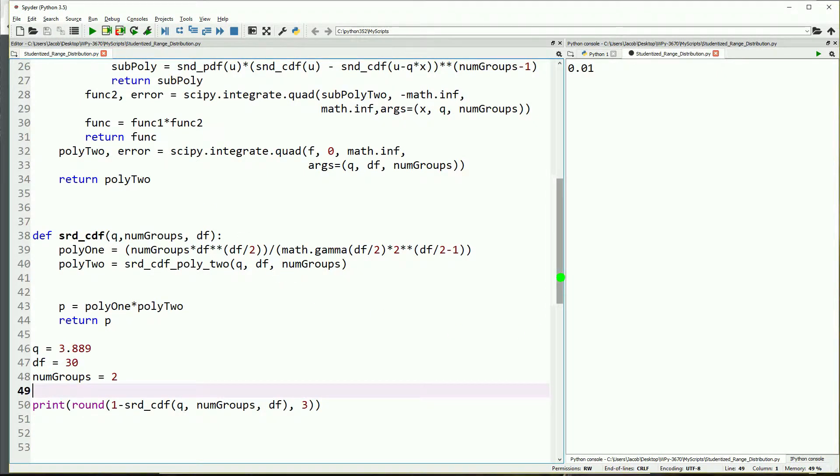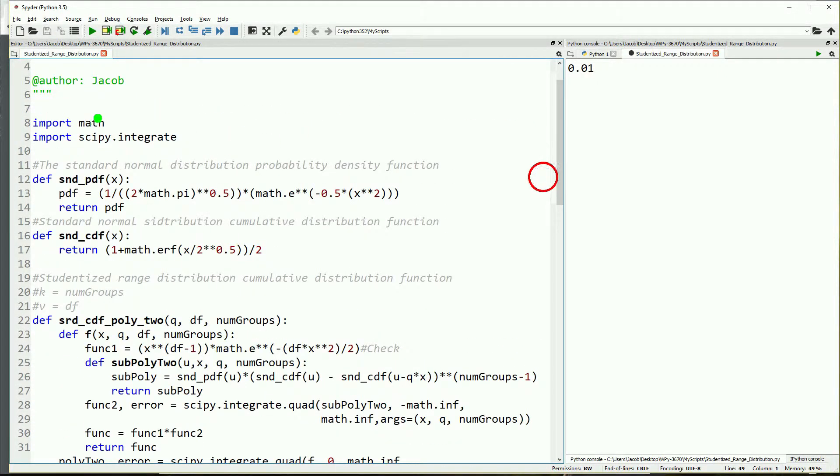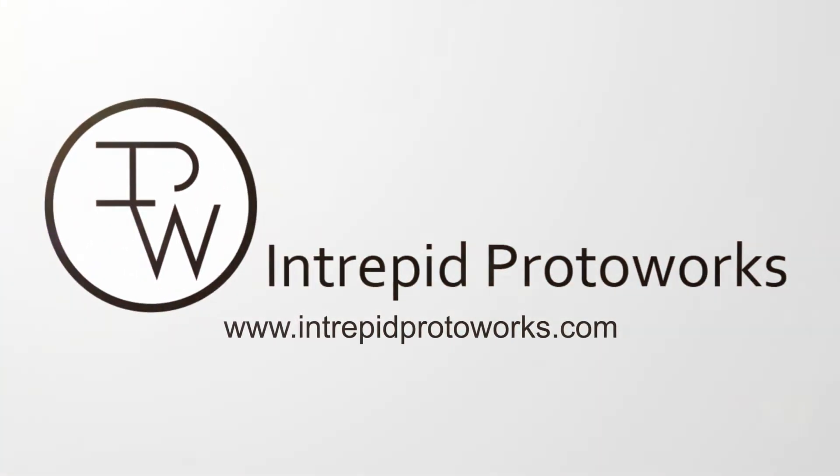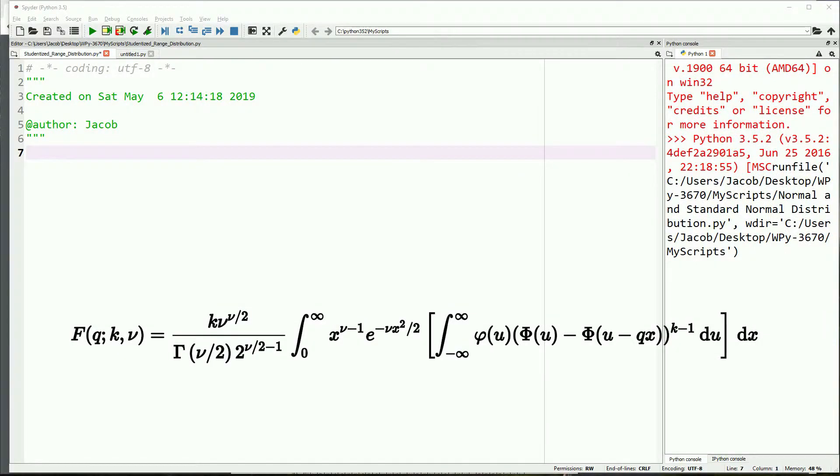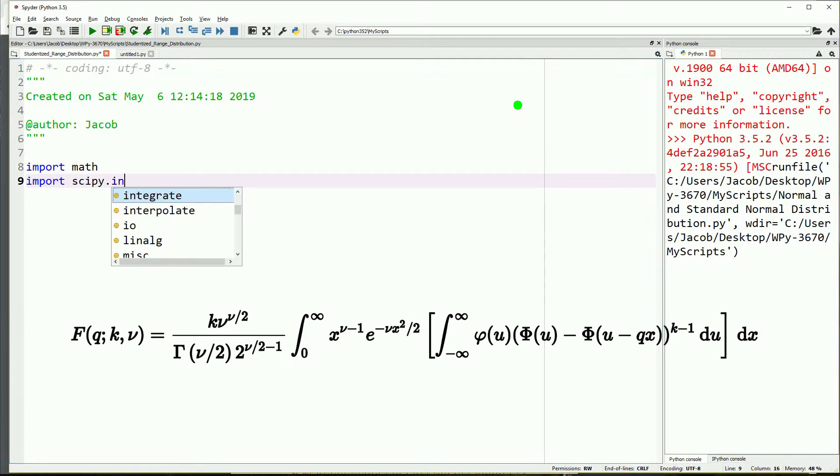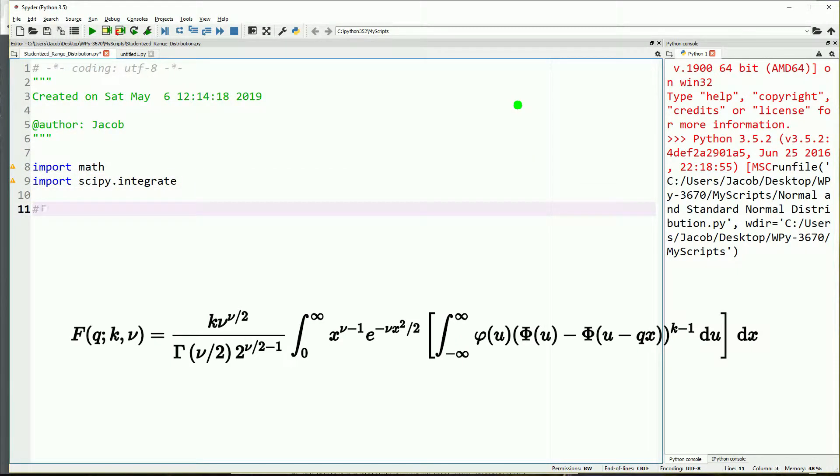My name is Jacob and I am a human factors consultant at Intrepid Protoworks. We have the full studentized range distribution pictured at the bottom of the screen right now. We'll move it around as needed to keep it out of where I'm typing.